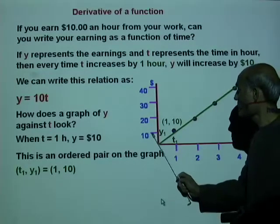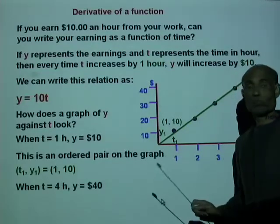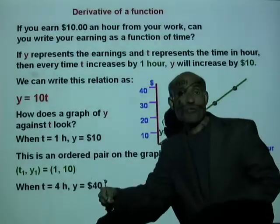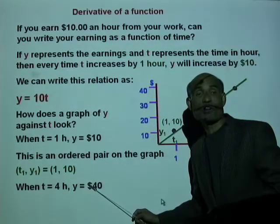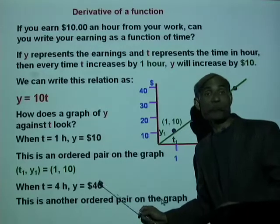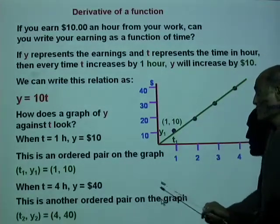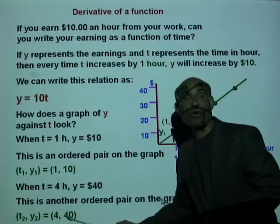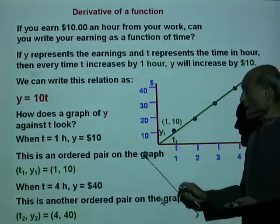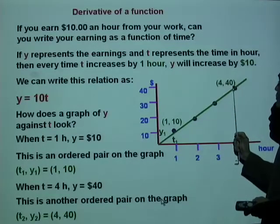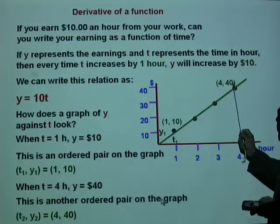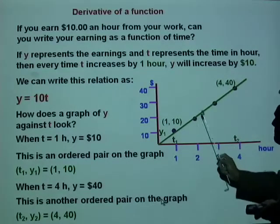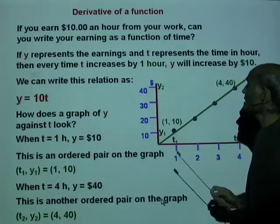t1 equals one hour, y1 equals ten dollars. When t equals four hours, you work for four hours, you will be earning forty dollars, and that is another ordered pair: t2, y2 equal to (4, 40). We can mark that ordered pair — t2 equal to four, y2 equal to forty.